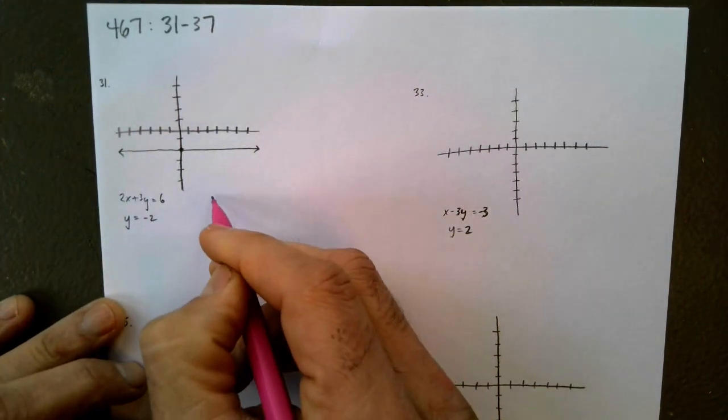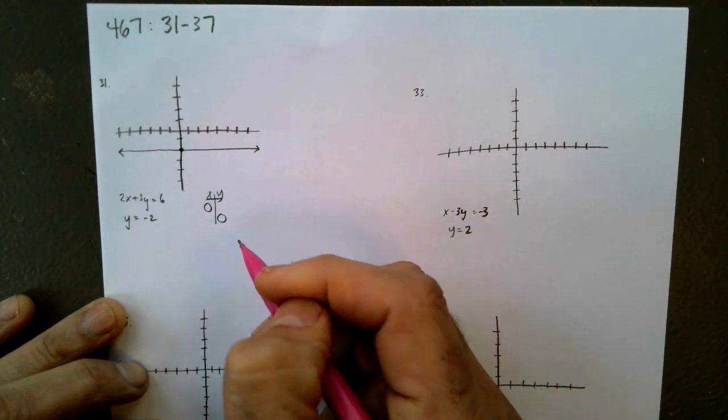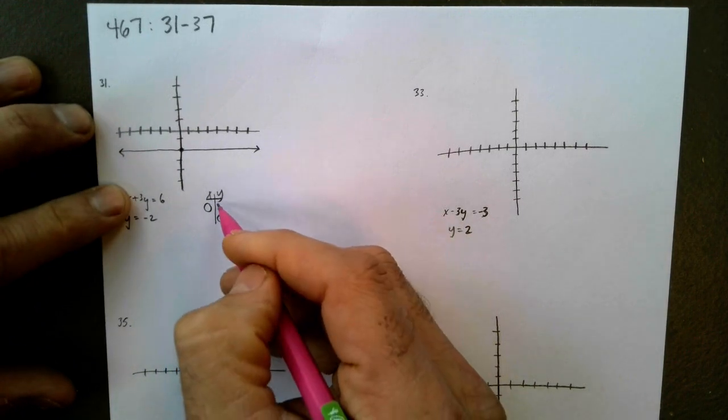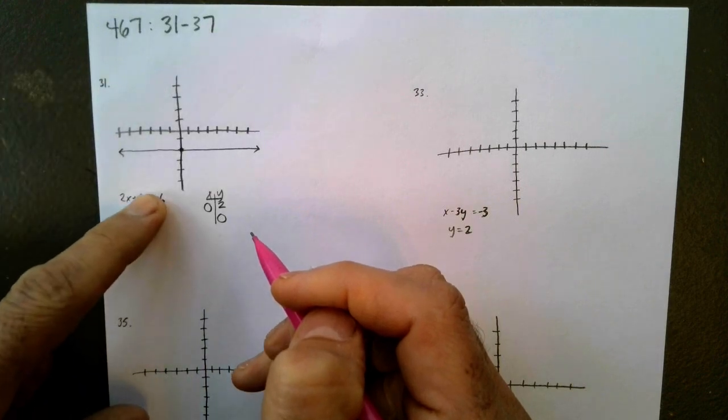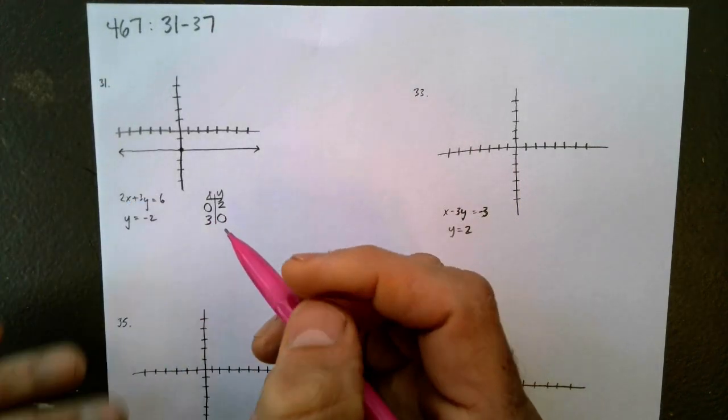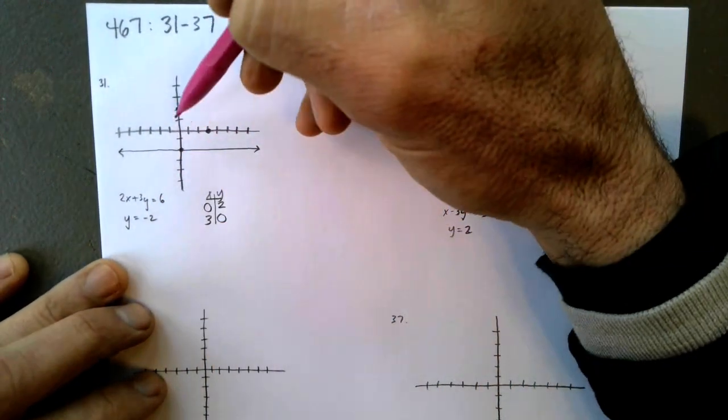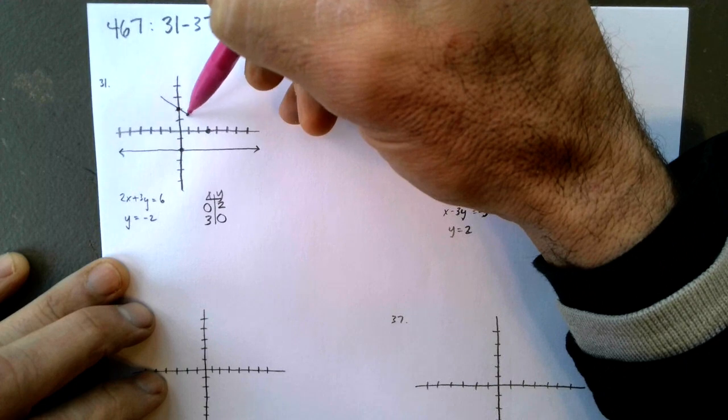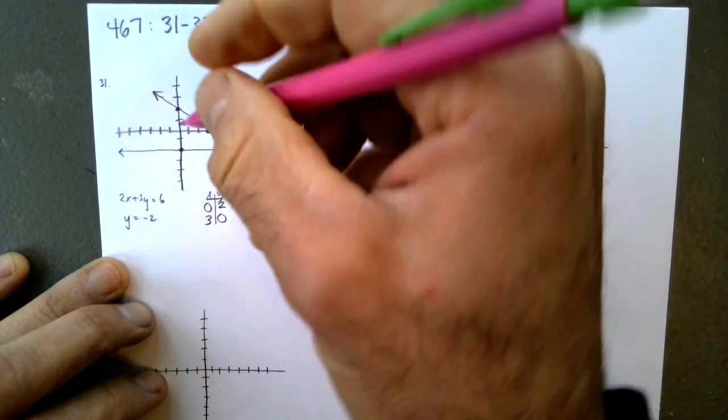Now, 2x plus 3y equals 6 is easiest for me to graph using intercepts. So if x is 0, y is 2, and if y is 0, x is 3. So 0, 2, 3, 0, and go for the graph easy. All right, where did we land?